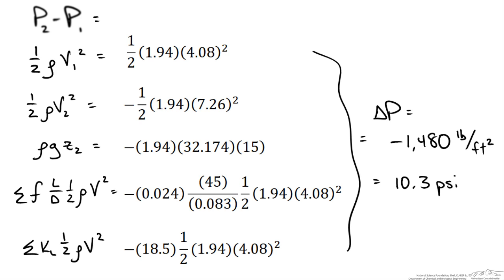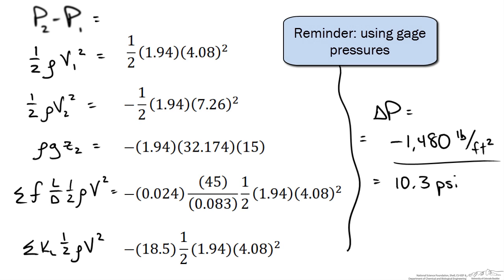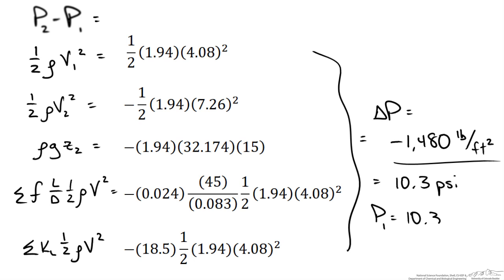Which is a much more reasonable value when talking about the pressure loss through a piping system such as the one in the problem statement. Now whether it is negative or positive doesn't really matter as long as we understand that it is a pressure drop and that the pressure is higher at the inlet than it is at the outlet. Now if we wanted to calculate what P1 was we would just need to know P2, which in this case is just exiting to the atmosphere so P2 is equal to zero. Which means that our inlet pressure for our system is also 10.3 psi.